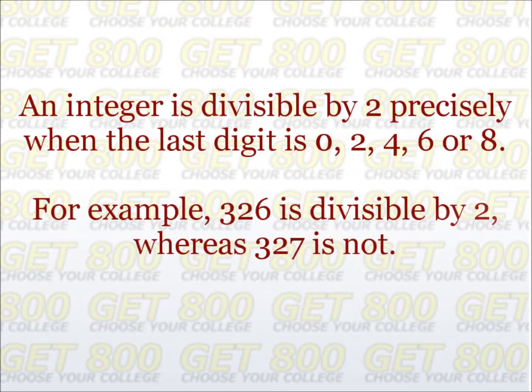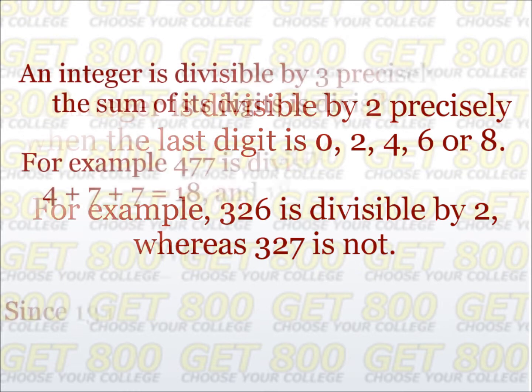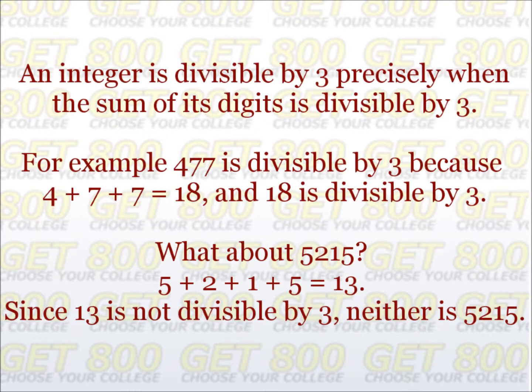For example, an integer is divisible by 2 precisely when the last digit of that integer is 0, 2, 4, 6, or 8. For example, the number 326 is divisible by 2, whereas the number 327 is not divisible by 2.